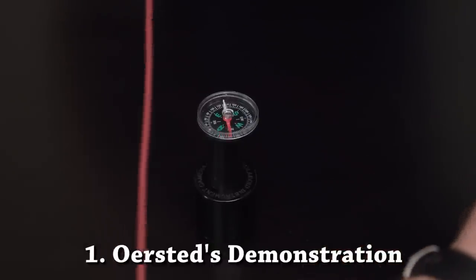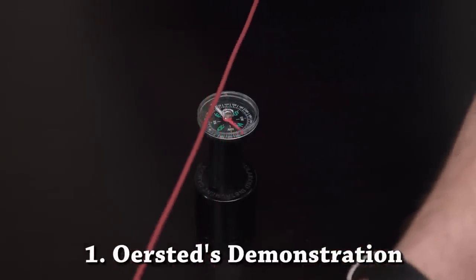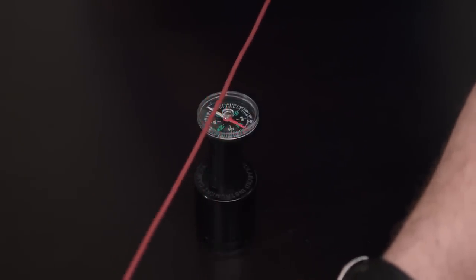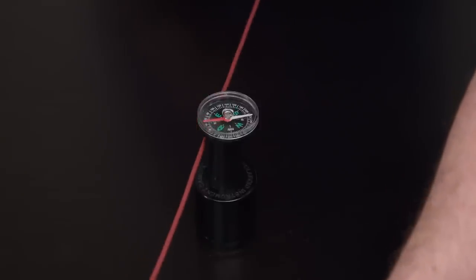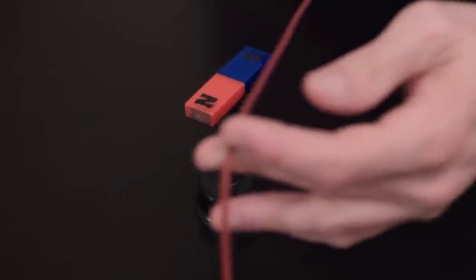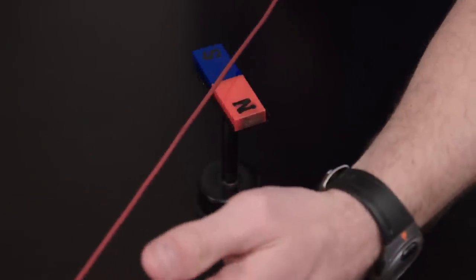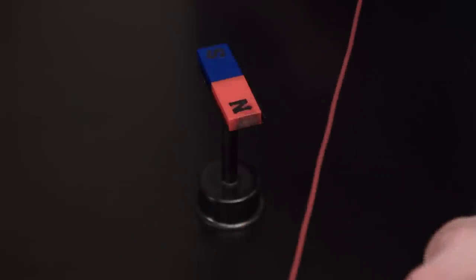When a current-carrying wire passes over a compass, the needle will deflect. If it passes underneath, it deflects the other way. This will also work with a magnet on a low friction bar magnet stand, which is essentially a compass.